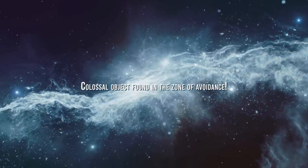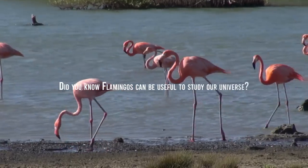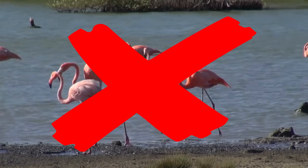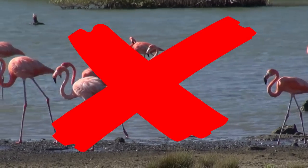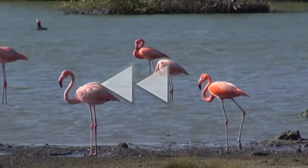Colossal object found in the zone of avoidance. Did you know flamingos can be useful to study our universe? No, no, I'm talking about those pinky birds with an S-shaped neck. I'll get to that later, but first, let's take a step back.